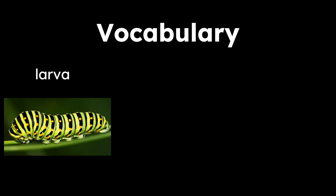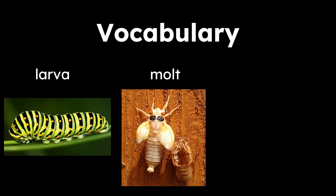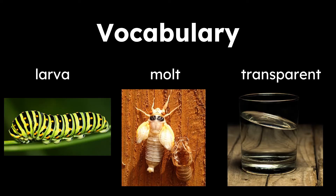Let's take a look at some vocabulary words in today's read aloud. The first word is larva, the early form of an insect that is not completely developed. The next word is molt, to shed an outer layer. And the last word is transparent — clear, able to see through.